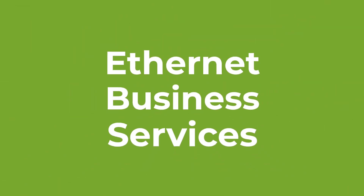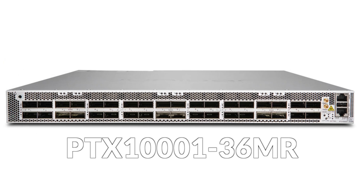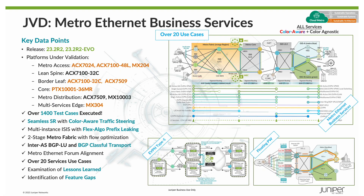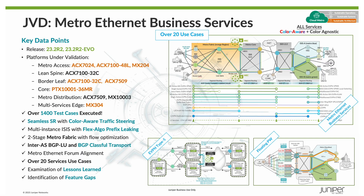Here's a snapshot of the key data points for the JVD I'll be covering today. By far, Metro EBS is our most comprehensive JVD to date, truly tackling complex challenges encountered in live networks. Our topologies leverage the Juniper WAN portfolio with about 26 devices in total, including MX-304, PTX-10136MR, ACX-7024, ACX-7100s, and ACX-7509. We executed over 1400 test cases in the process of validating the solution architecture. As part of the solution, we include over 20 different use cases for delivering Metro Ethernet services, such as the two shown on the bottom right.